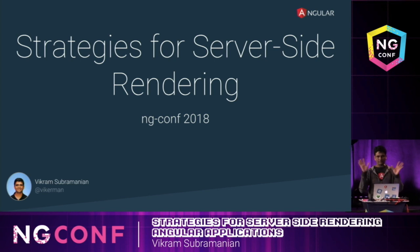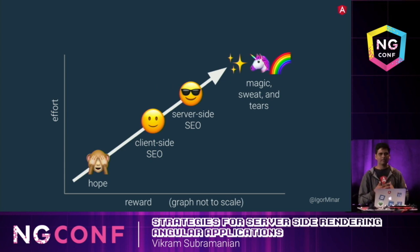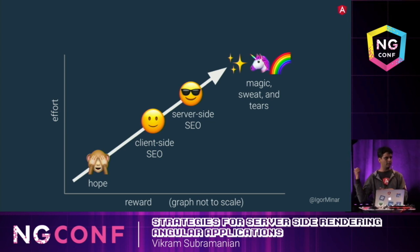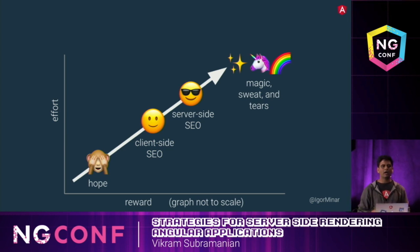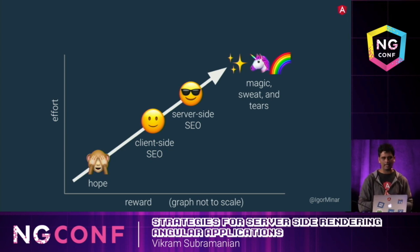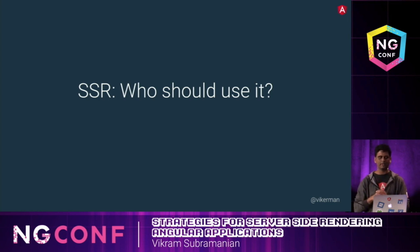Before going into any of the new strategies, I want to give a short description of why you would be interested in server-side rendering. This is a slide from Igor's SEO presentation. Server-side rendering is not completely necessary — client-side SEO is also possible — but what server-side rendering allows you to do is get better quality SEO. Whenever people have been asking who should use it, we've been saying: if you want faster performance, SEO, or social preview, use Angular Universal.